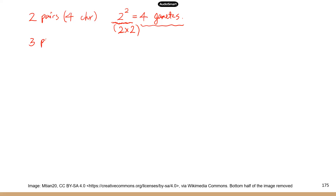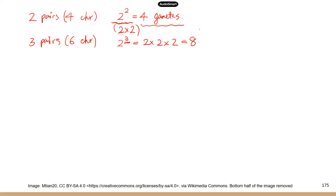What if you have three pairs of chromosomes? That's a total of six chromosomes. The calculation would be two to the third, where the exponent is the number of chromosome pairs. That's two times two times two — eight unique combinations of chromosomes, giving you eight genetically different gametes.